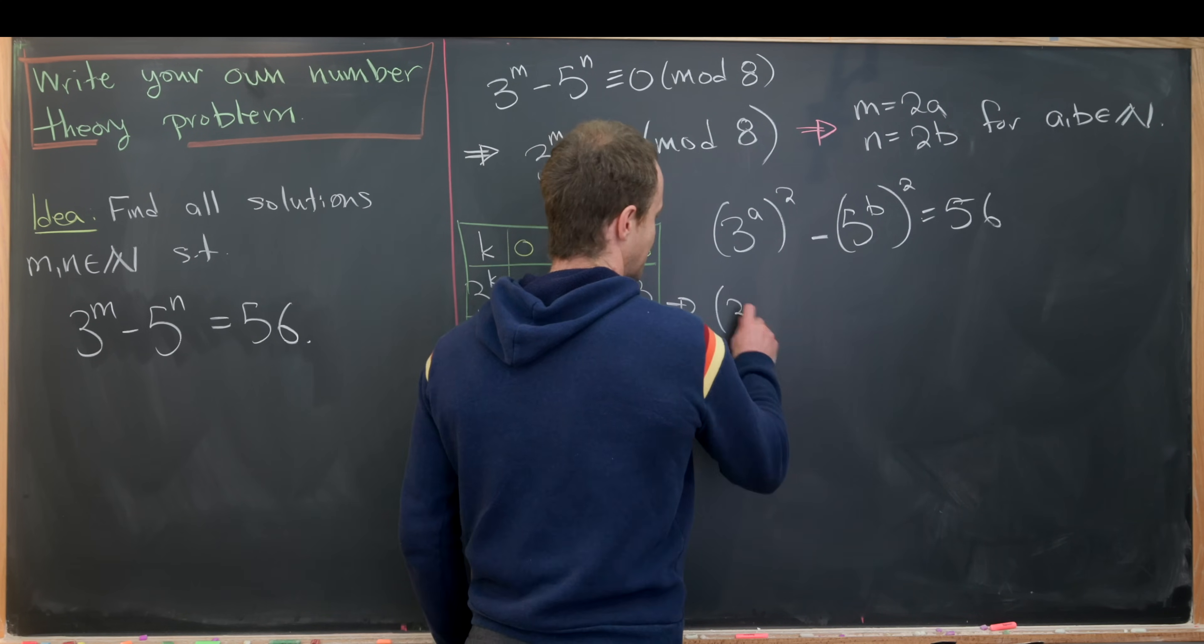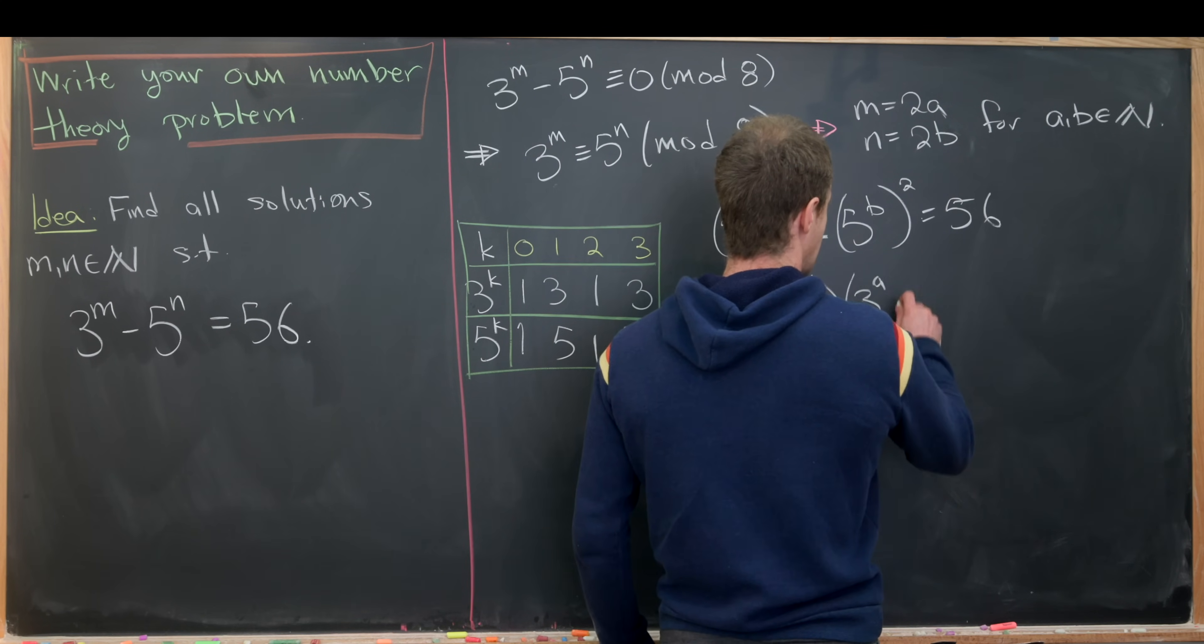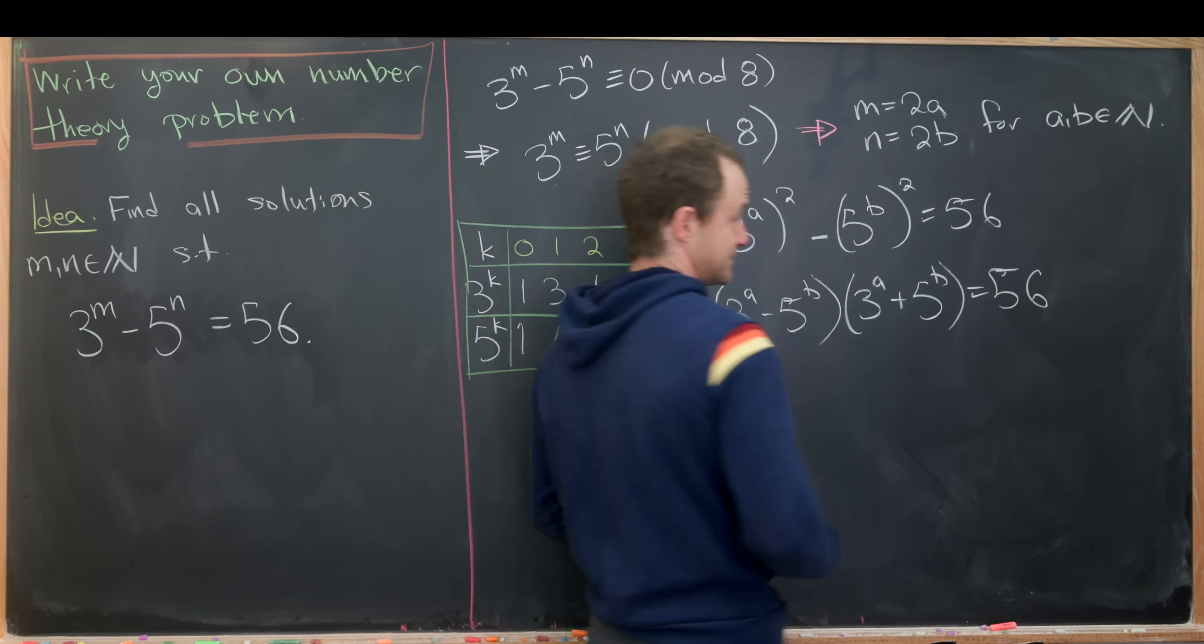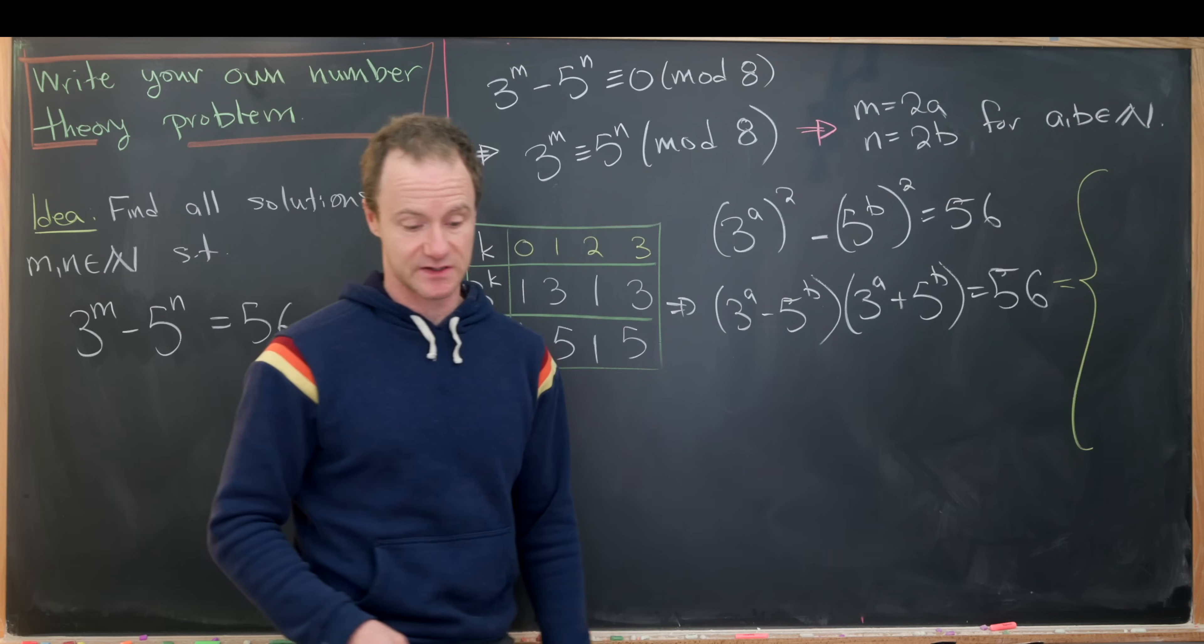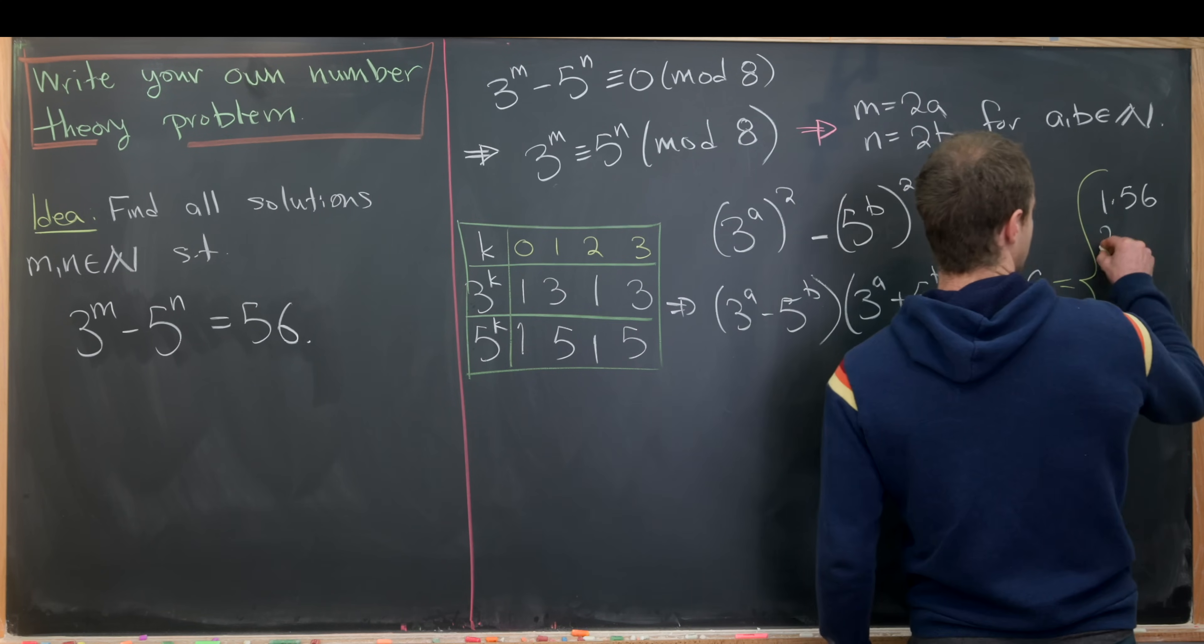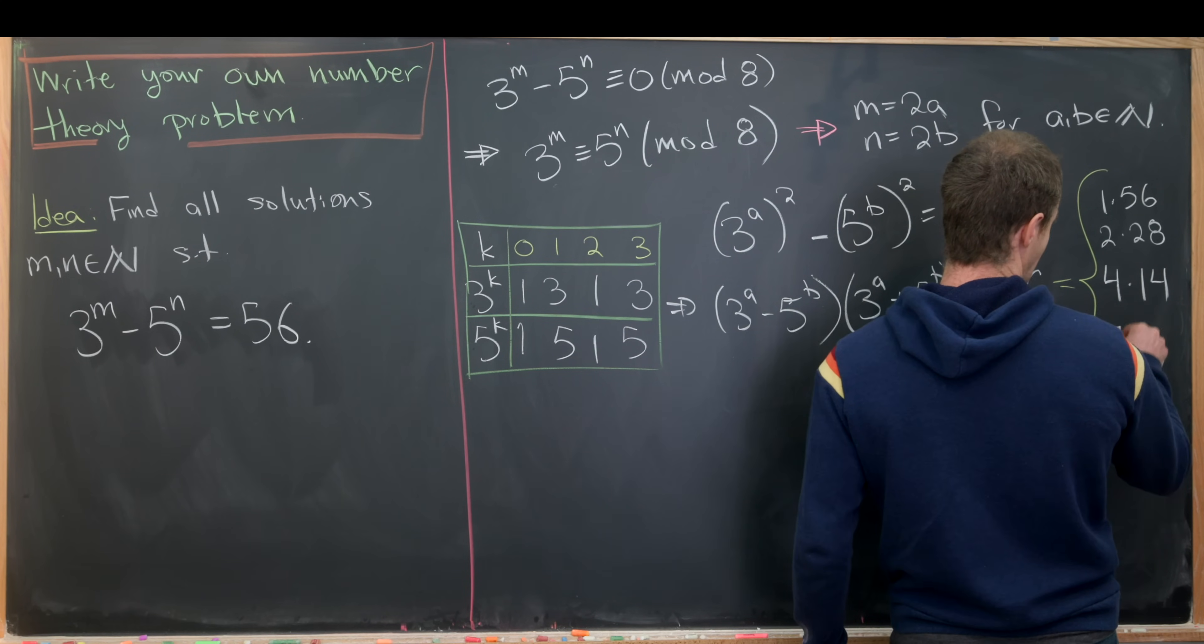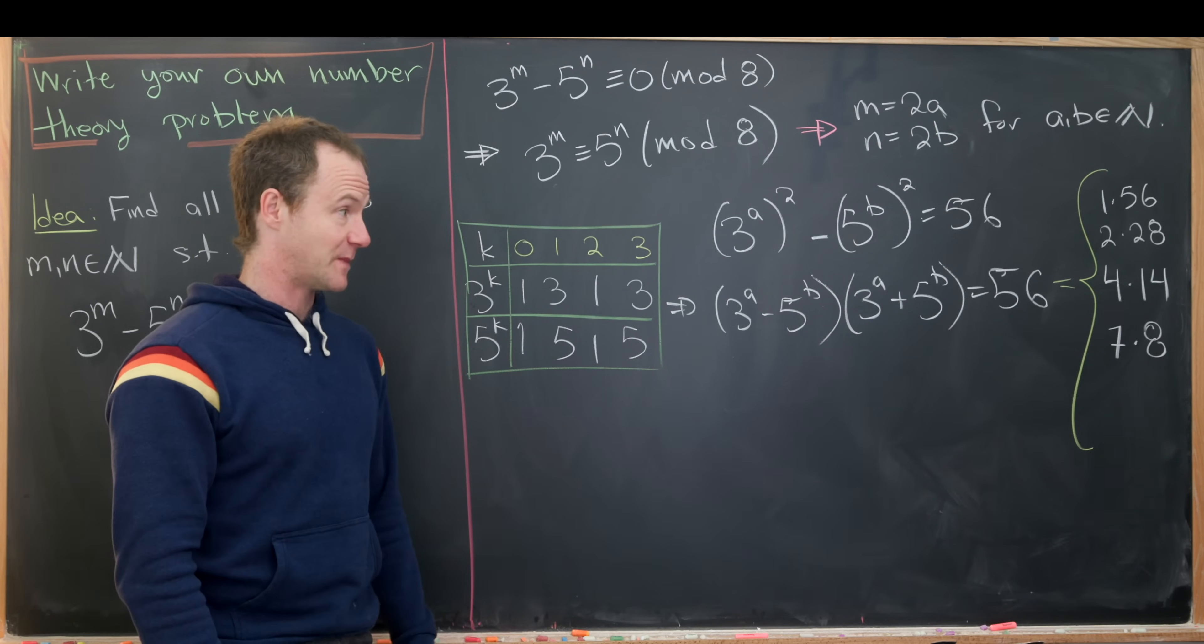That gives us 3 to the a squared minus 5 to the b squared equals 56. Notice I use exponent rules to write this as a difference of squares, which is extremely helpful because now we can factor: 3 to the a minus 5 to the b times 3 to the a plus 5 to the b equals 56. A standard thing to do here would be to look at all the factor pairs of 56: 1 times 56, 2 times 28, 4 times 14, and 7 times 8.